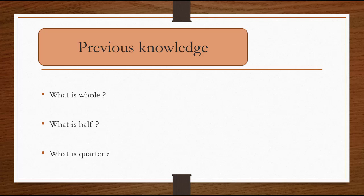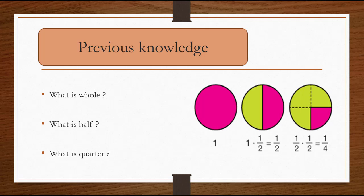Dear students, we have already learned about fractions. First of all, we will revise the main points of the previous lesson. You know what is whole, what is half, what is quarter. The complete circle we have in this picture — that is whole. When we divide this object into two equal parts, then each part is called one half. When we divide an object into four equal parts, then each part is called one quarter.